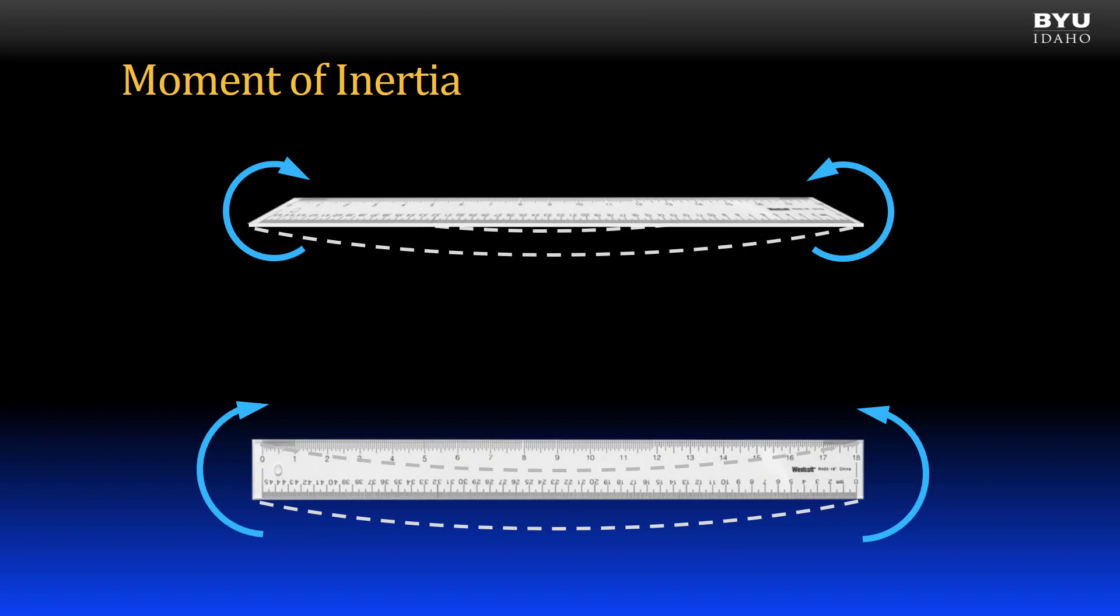When calculating bending stress or bending deformations, using equations that will be taught to you in your future Mechanics of Materials course, the moment of inertia appears in the denominator of those equations. So, the bigger the moment of inertia, the lower the bending stress and the lower the bending deformation. So, as moment of inertia gets bigger, the resistance to bending increases.